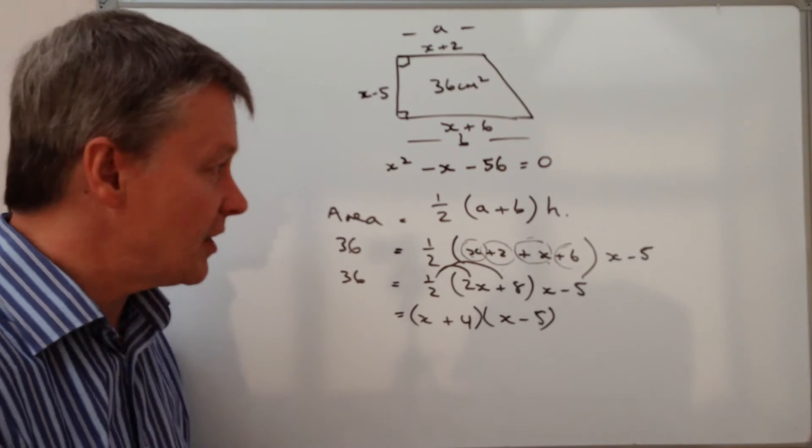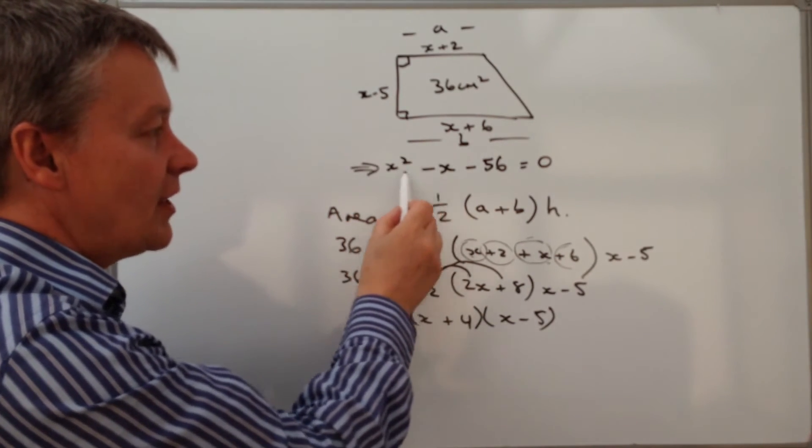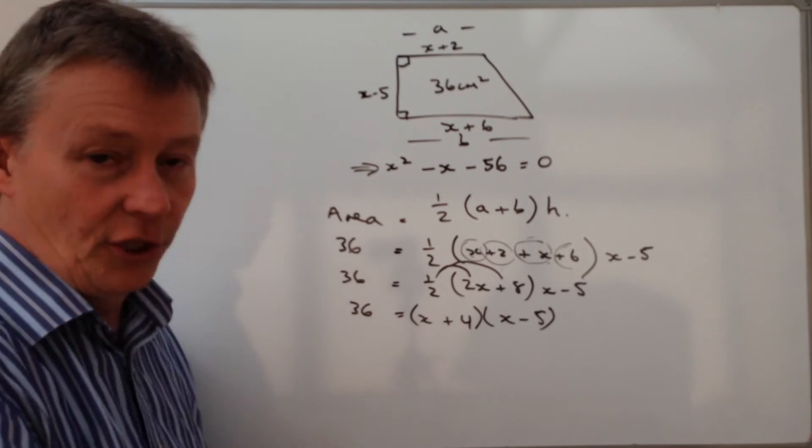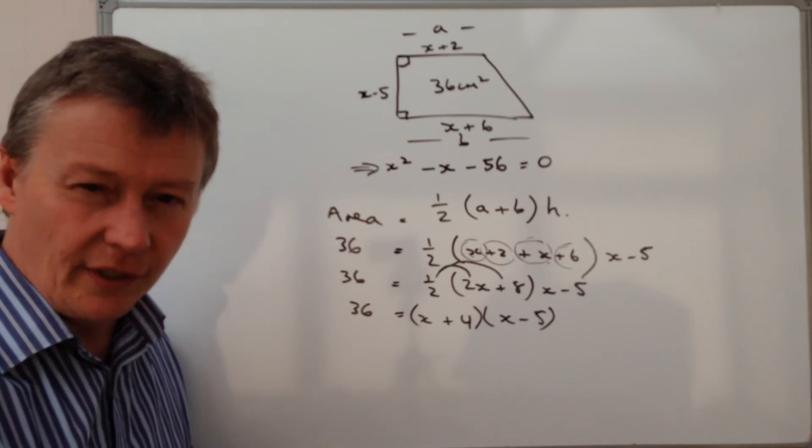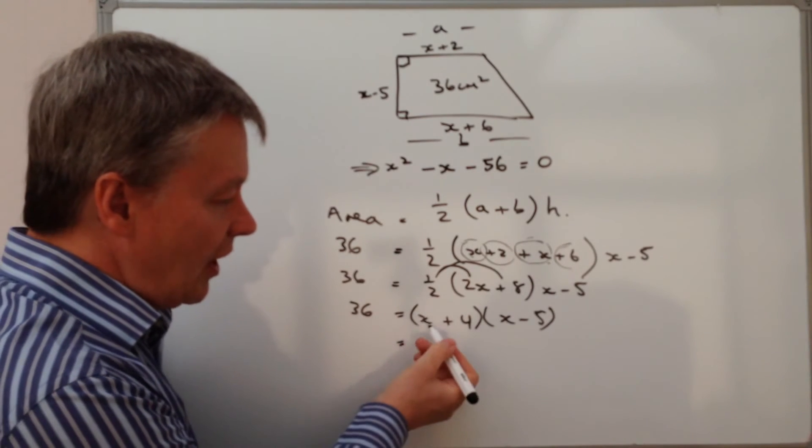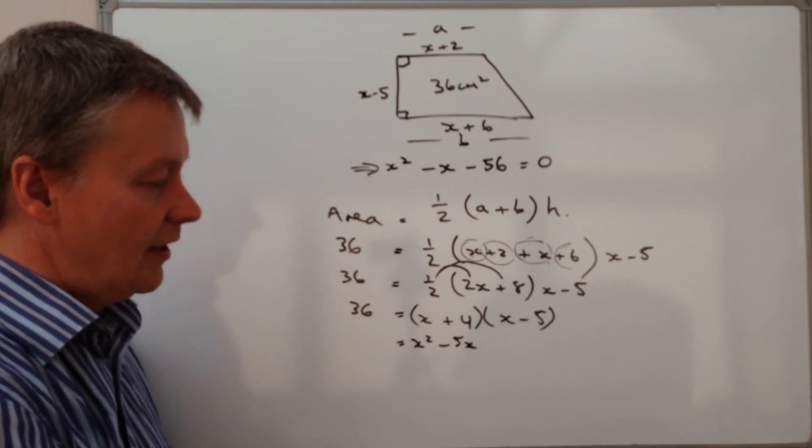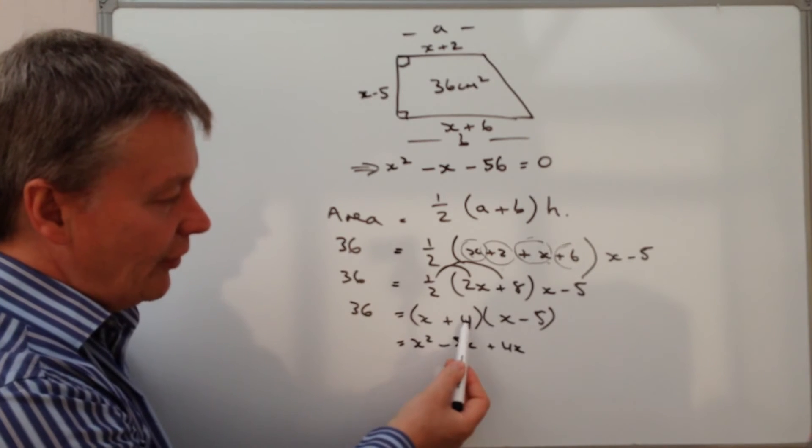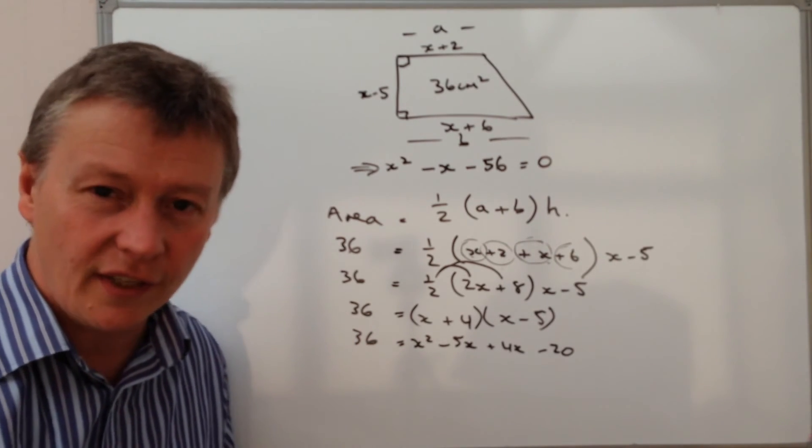Now we're starting to get a bit closer to how a quadratic equation would actually look. I'm going to multiply out the brackets now, bearing in mind what I'm looking to do is get this to a situation where it proves x squared minus x minus 56 equals zero. At the moment I've got 36 equals these two brackets multiplied together, so I'll multiply these two brackets. There are a couple of different methods of doing this. I tend to use something called crab claw, and if you have a look on some of the videos that will show you that method. I'm going to say x times x is x squared, then x times minus 5 is minus 5x, then plus 4 times x which is plus 4x, and plus 4 times minus 5 is minus 20, and that also equals 36.